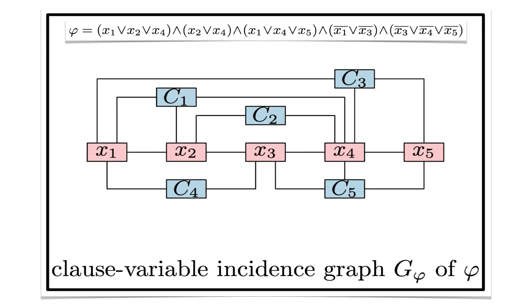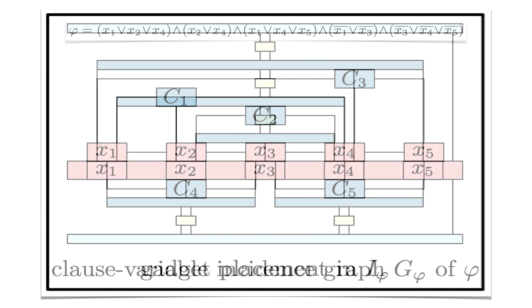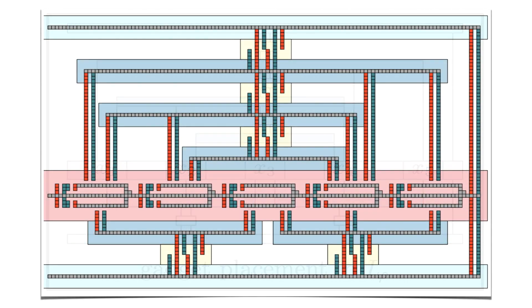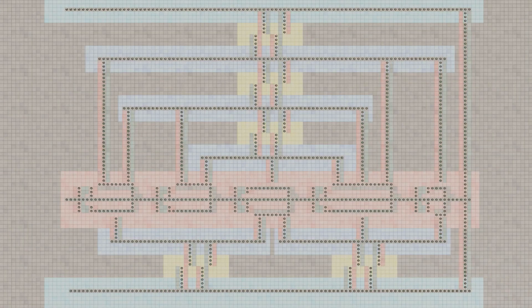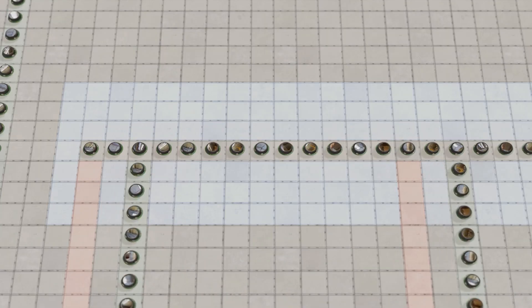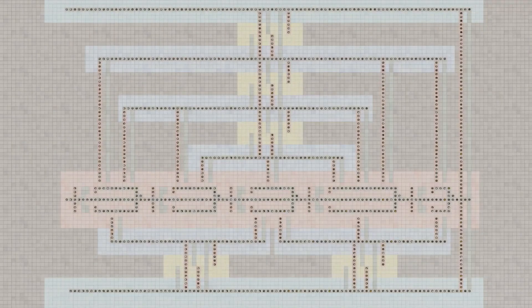But even checking whether a makespan of 2 can be achieved is an NP-hard problem. Here is the proof idea, based on a reduction from planar monotone 3SAT. Variables are represented by rows of robots with clauses above and below. Additional robots ensure connectivity. This is what the overall reconfiguration looks like with moving robots. Here is a close-up of a clause, and here is a close-up of a variable.